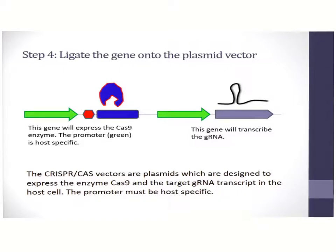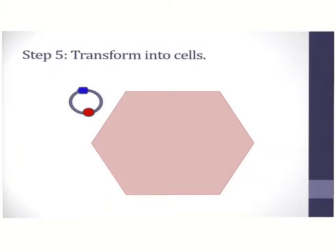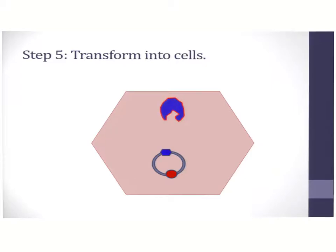However, the second fragment, which represents the gRNA, is transcribed but not translated into proteins. This engineering design is essential to ensure that the Cas9 and the gRNA are compatible with each other. In the next step, we transform the plasmid into cells. This process ensures that the Cas9 enzyme and its corresponding RNA molecules are expressed in the same cell under the same set of conditions.